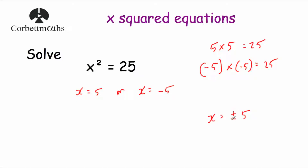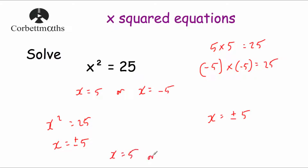The plus sign with a little minus sign beneath it means plus or minus — that means x can be equal to 5 or x is equal to negative 5. So if we had x squared equals 25, then x can equal plus or minus 5. I tend to write my answers out as x equals 5 or x equals minus 5.